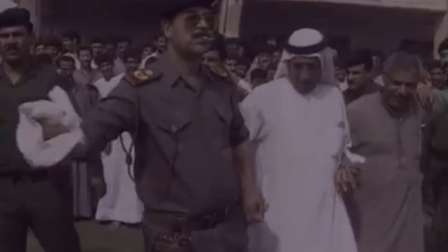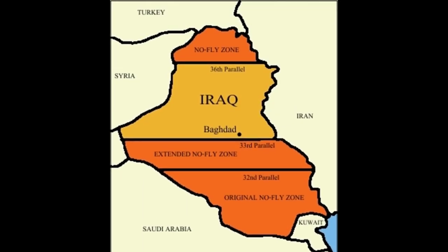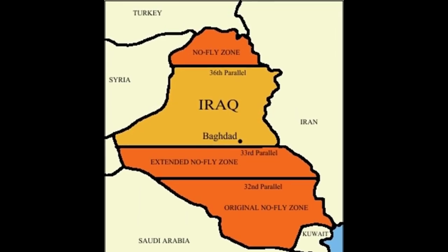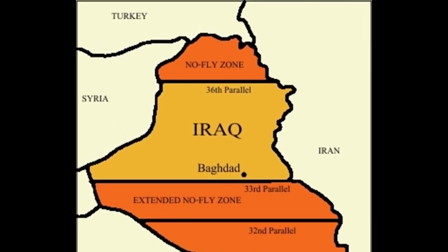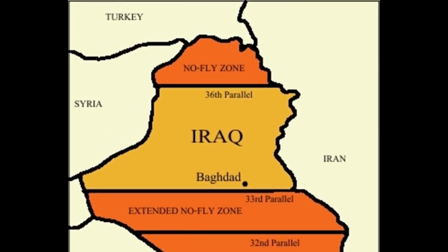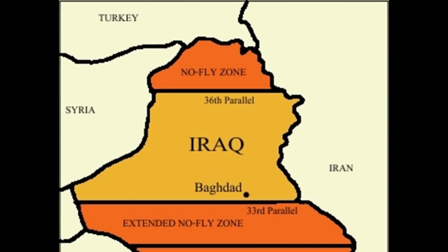At the last minute, the US decided to stop the bombings of Baghdad and give Saddam a second chance. However, no-fly zones were implemented over Shia and Kurdish areas, which for a while gave these people the opportunity to strengthen themselves.